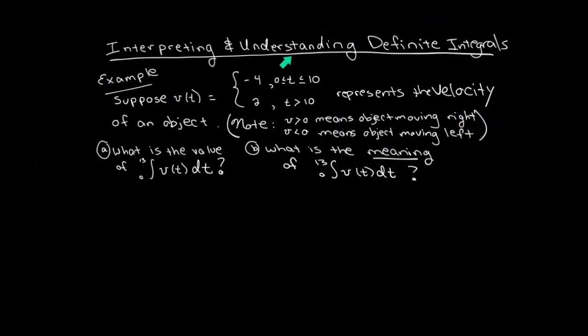Today, we're going to work on the understanding and interpretation of definite integrals. So here's an example. Suppose that I had a function here. It's a piecewise function, as you can see. It's a function that represents the velocity of an object. Remember that typical units for velocity could be something like meters per second.